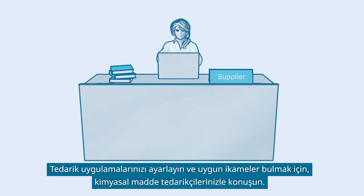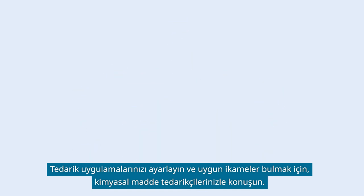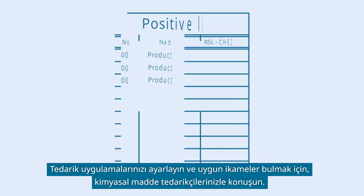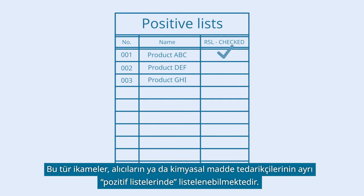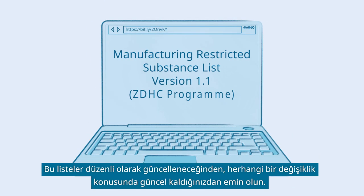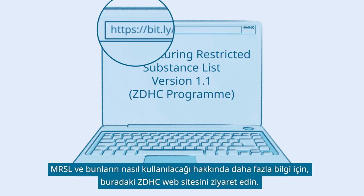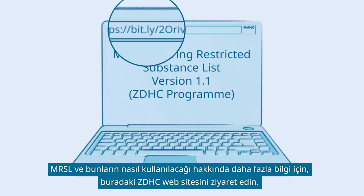Adjust your procurement practices and talk to your chemical suppliers to find suitable substitutes. Such substitutes may be listed on separate positive lists of buyers or chemical suppliers. Since these lists will be updated regularly, make sure to stay up-to-date about any changes. For more information on MRSL and how to use these, visit the ZDHC website.